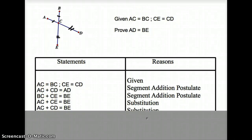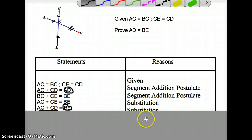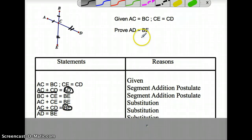As you can see, those two are exactly the same. This is the same thing as this. Therefore, this has to be equal to this. So that's our final step: AD equals BE, which is what we're trying to prove, by substitution.